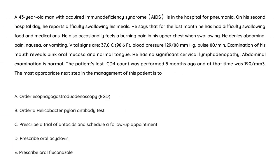A 43-year-old man with AIDS is in the hospital for pneumonia. On the second hospital day, he reports difficulty swallowing — for the last month he has had difficulty swallowing food and medications. He also complains of burning pain in the upper chest when swallowing, and denies abdominal pain, nausea, or vomiting. Vitals are essentially normal. Examination of the mouth reveals pink oral mucosa and a normal tongue with no significant cervical lymphadenopathy. Abdominal exam is normal. His last CD4 count, performed five months ago, was 190.